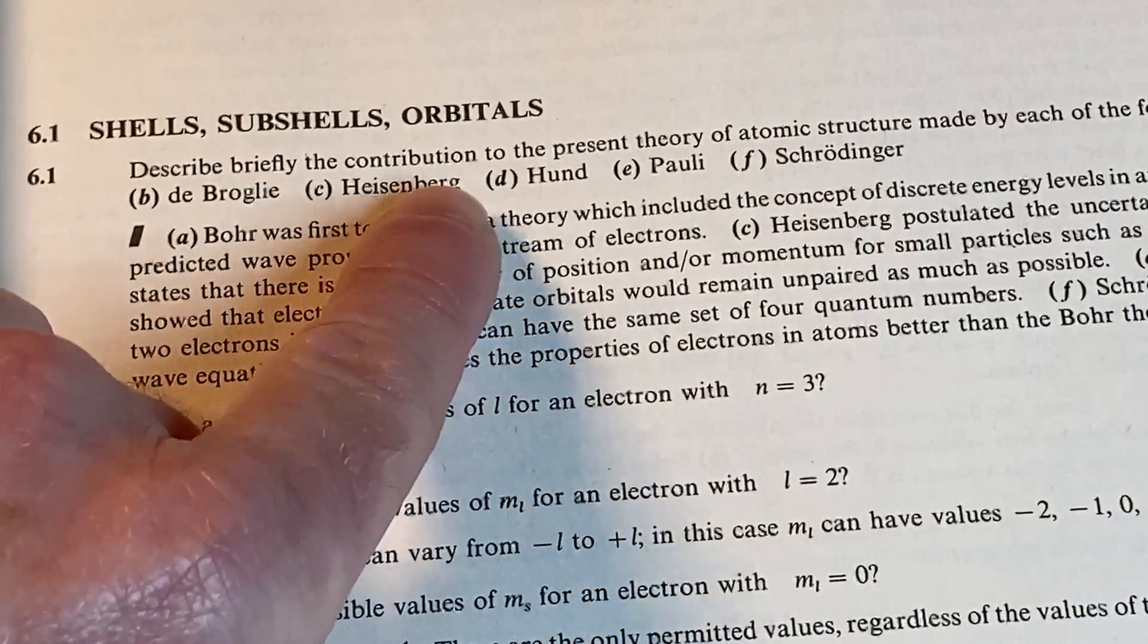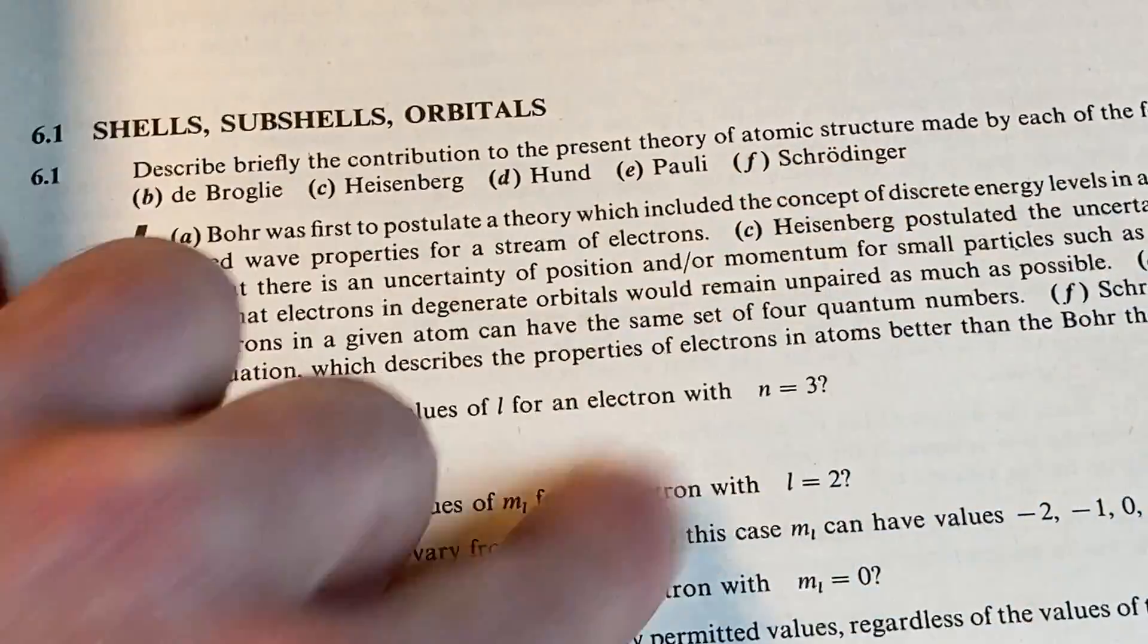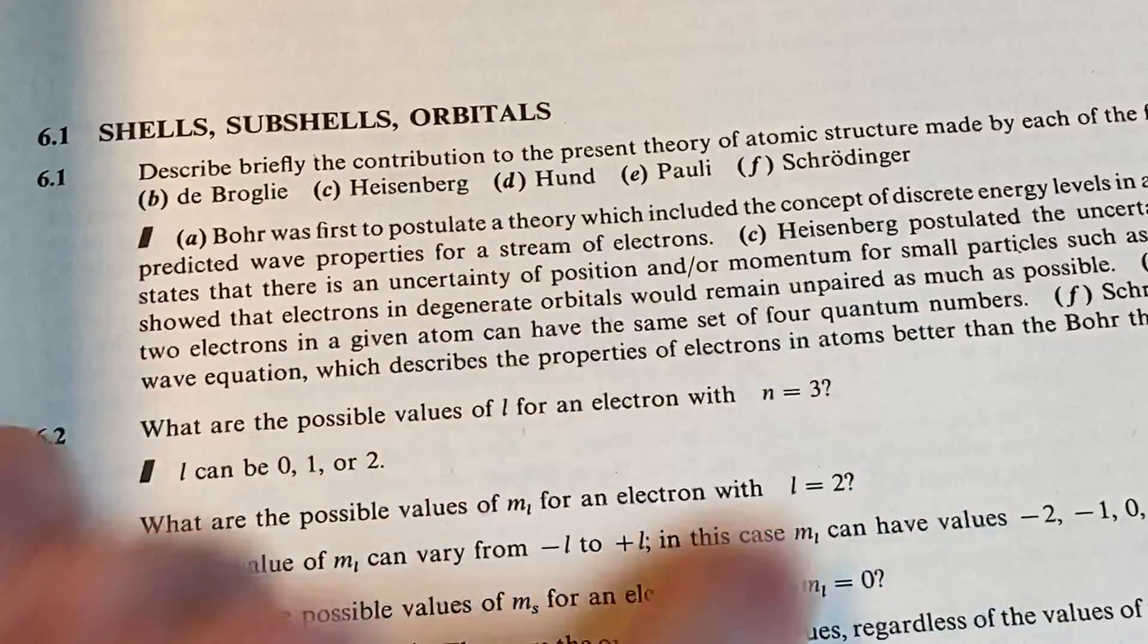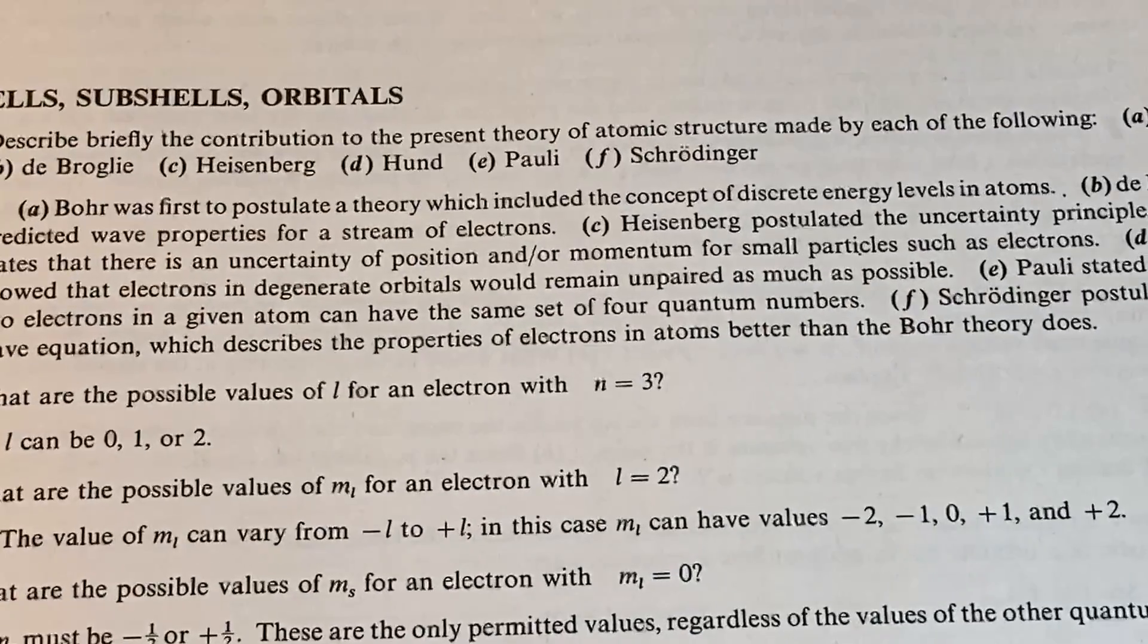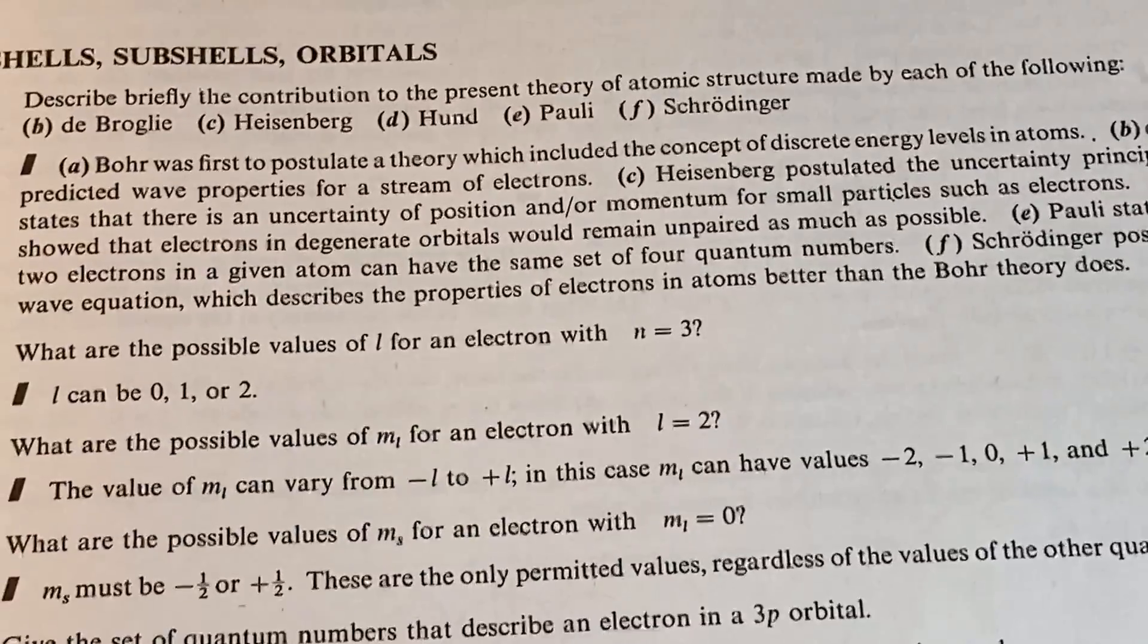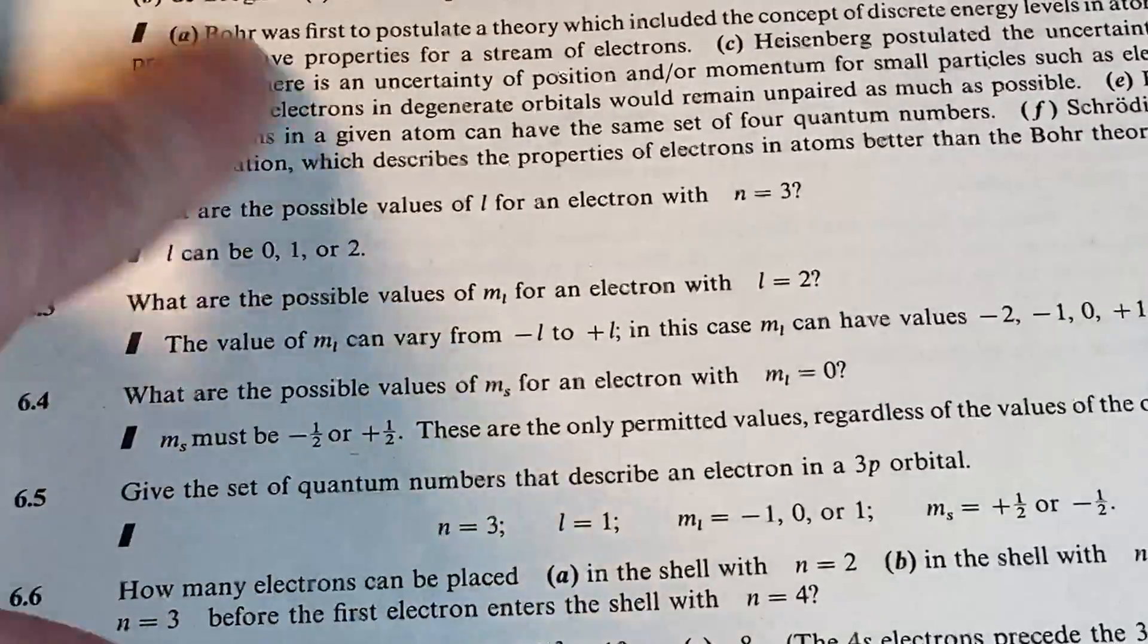So you can see here, describe briefly the contribution to the present theory of atomic structure made by each of the following. And then you've got these different scientists here. Oh, there's Schrödinger. Good to see Schrödinger make an appearance in this book. Heisenberg is always a fun one. And then they have the answers here.